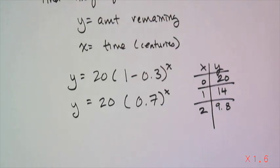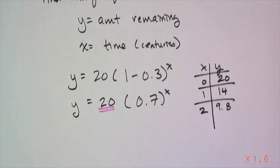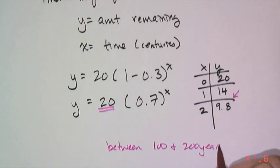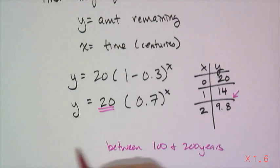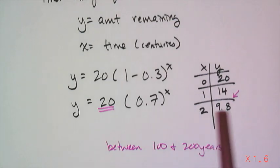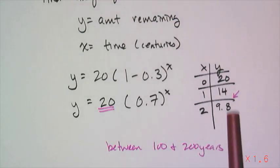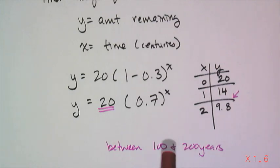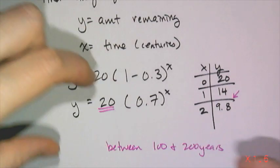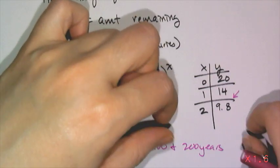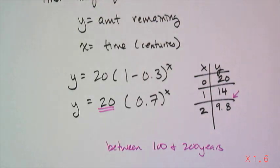The half-life is the amount of time it takes for half of the substance to decay away. Since my original amount was 20, I'm looking for 10. I know between 100 and 200 years, because remember these were time in centuries, that's my half-life. So half of it's going to remain, and it's going to be closer to 200, because I have a 9.8 there, and 10 is closer to 9.8 than it is to 14. This is when you use the graphing calculator to fine-tune your range, and you can actually use it to go by tenths or by hundredths to get a much better estimate for your half-life.